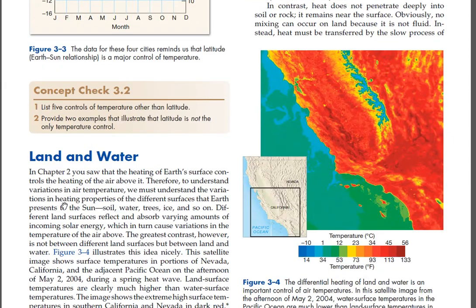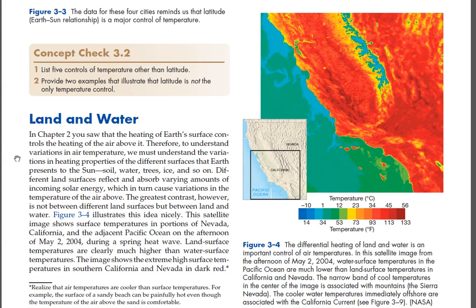Land and water. In Chapter 2 you saw that the heating of Earth's surface controls the heating of the air above it. Therefore, to understand variations in air temperature, we must understand the variations in heating properties of the different surfaces that Earth presents to the sun — soil, water, trees, ice, and so on. Different land surfaces reflect and absorb varying amounts of incoming solar energy, which in turn cause variations in the temperature of the air above. The greatest contrast, however, is not between different land surfaces but between land and water.